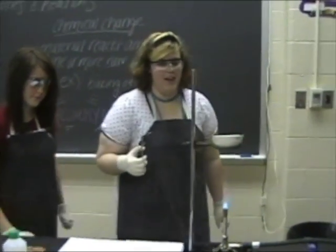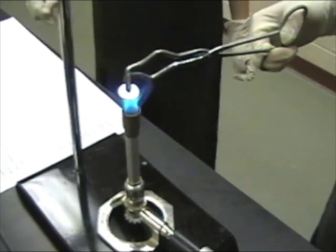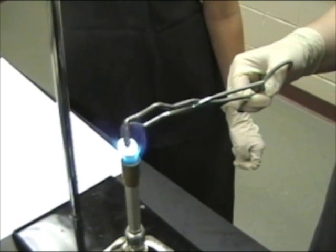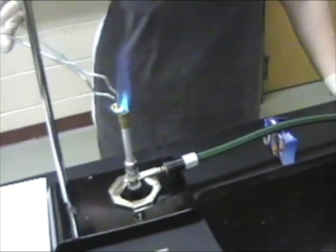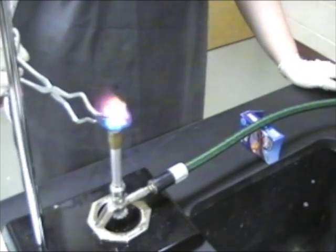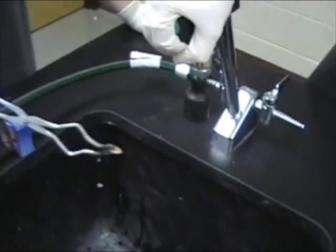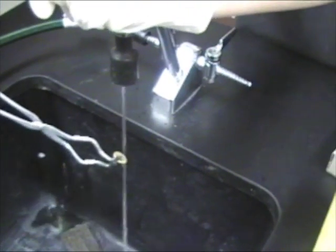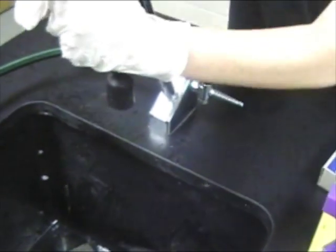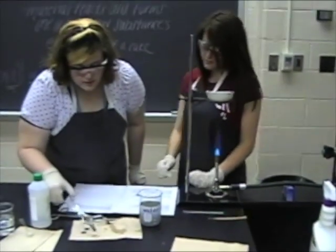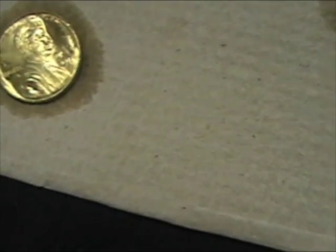Grasp the penny in your tongs and put it in the bluest part of the Bunsen burner flame — there's a light blue zone. Put it in the deepest part of the flame and wait for a color change. Once the color has changed, you quickly put it under cold running water. And now you have successfully created a gold and silver penny.